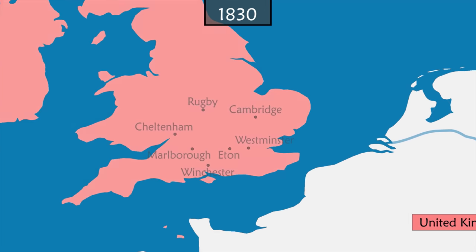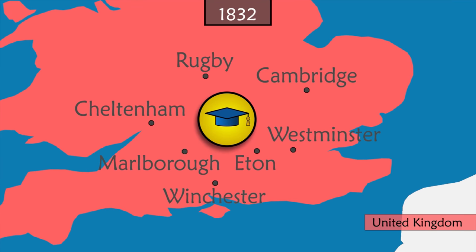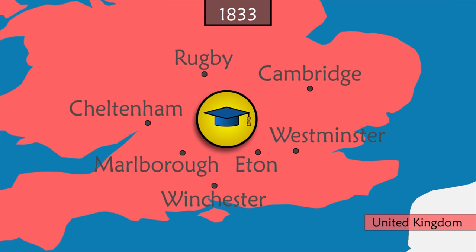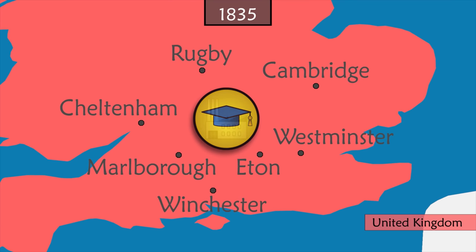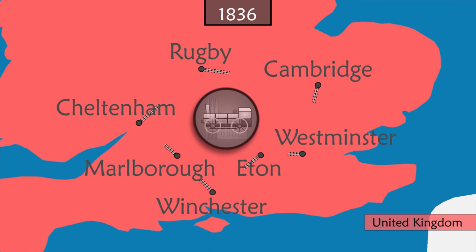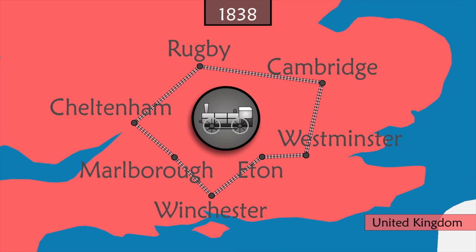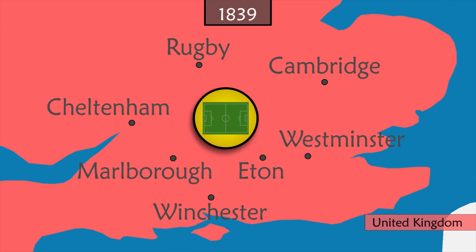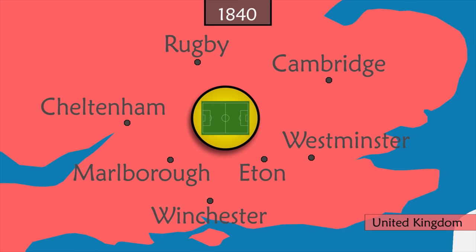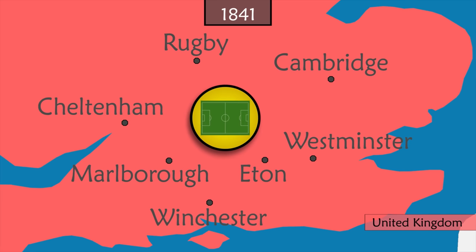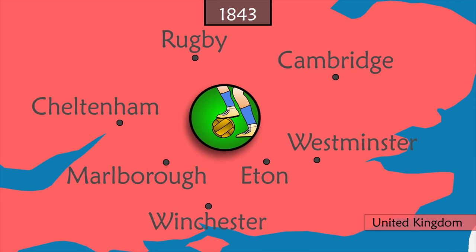At the beginning of the 19th century in British colleges and universities, team sports are seen as a good way to train young people in discipline, team spirit, and leadership. At the same time, the industrial revolution and the advent of the railroad facilitate exchanges. The idea of organizing inter-university matches appears, but each team plays with its own rules, and the first meetings are confused — especially between teams that mainly favor dribbling (playing with the feet) and those that mainly favor handling (playing with the hands).